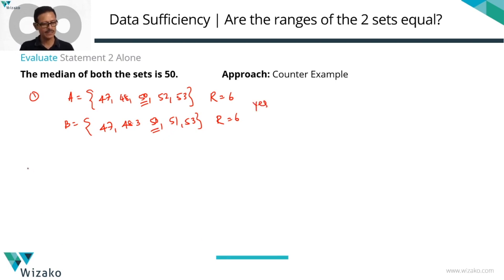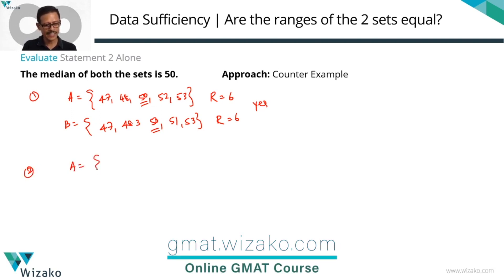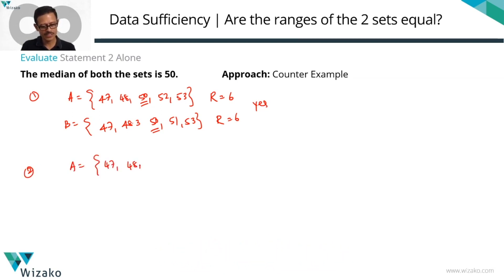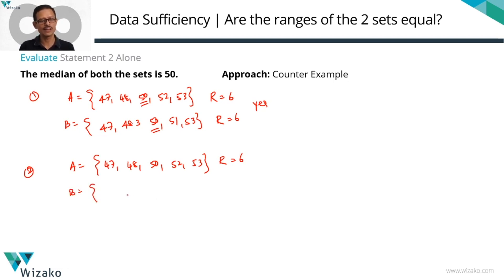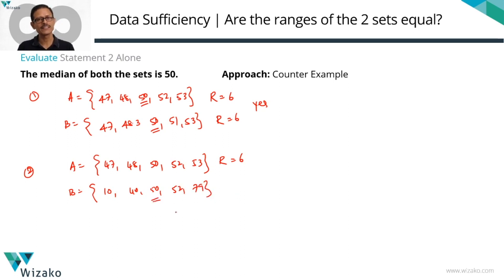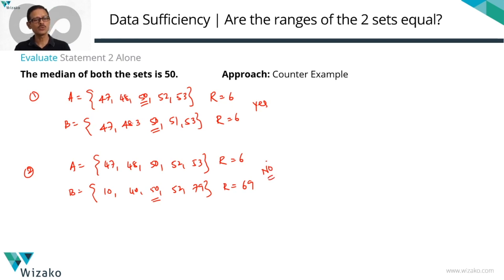Now let's look for a counterexample. Keeping A as 47, 48, 50, 52, 53 with range = 6. For set B, I pick 5 numbers: 10, 40, 50, 52, 79. Is 50 the median? Yes. The number of elements in both sets equals 5. What's the range for set B? Range equals 69. The ranges are not the same, so we found a counterexample. Statement 2 alone is also not sufficient.